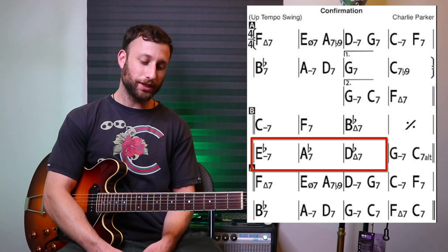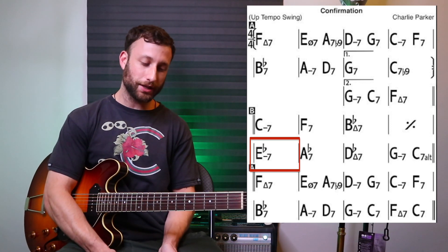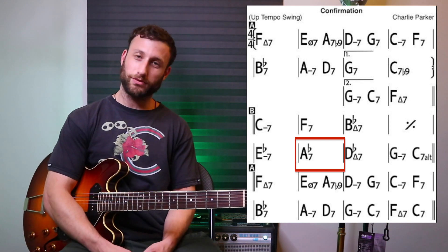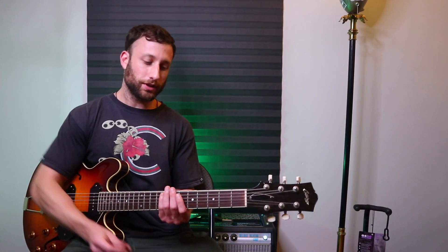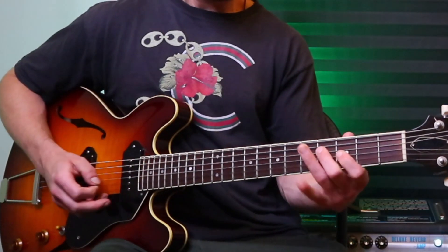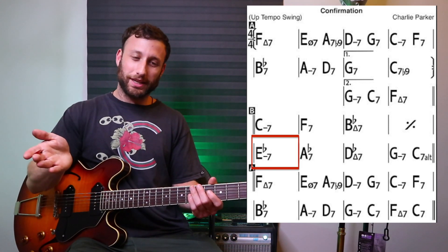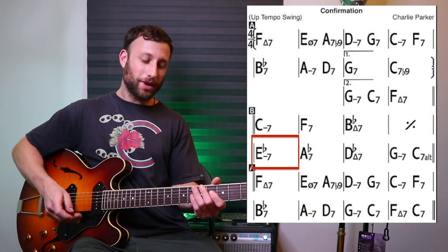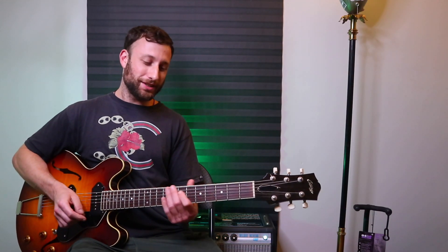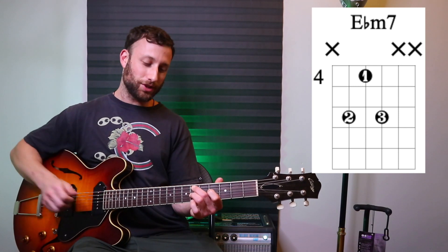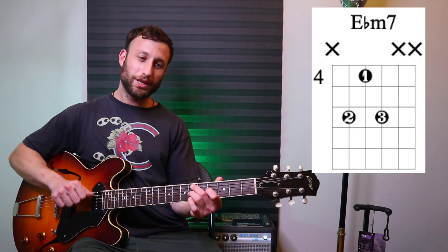Next we have another 2-5-1 progression, now in the key of D-flat major. So we have a whole measure of E-flat minor seven, a whole measure of A-flat seven, and then a whole measure of D-flat major. The next phrase comes in on the and of four, then lands on the downbeat of beat one, where the harmony is E-flat minor seven. The perfect voicing to play here is the very basic and simple E-flat minor seven shell voicing, because it has the flat seven on top. It doesn't matter if it's basic or doesn't have colored notes — it's the right voicing to use here, and I'm letting this one ring out a little bit more for some contrast.